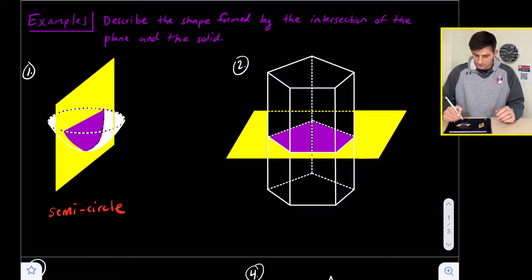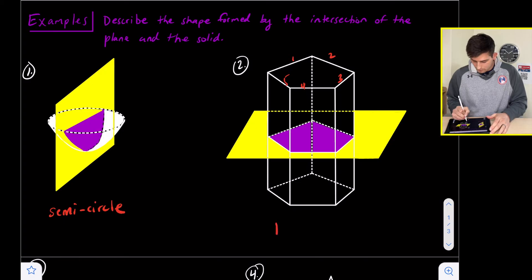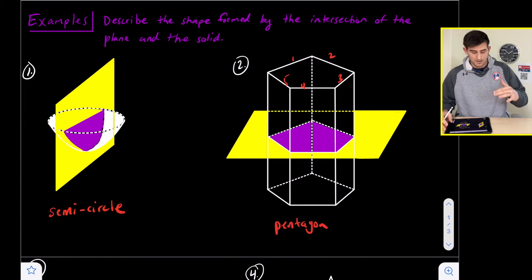For number two, notice we have one, two, three, four, and five sides on this shape. This is a pentagonal prism, and we are slicing it directly in half horizontally. So our cross section here will be a pentagon.